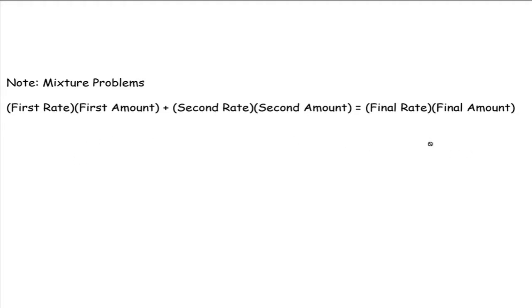So once we understand the difference between those two things, then in order to set up our little equation here, we just take the rate of the first item and the amount of the first item, we multiply those together. Then we add the rate of the second item times the amount of the second item. And if we had three things we're mixing, we would have plus the third rate times the third amount, so forth and so on. Then, all of that is equal to whatever the final rate needs to be and the final amount.